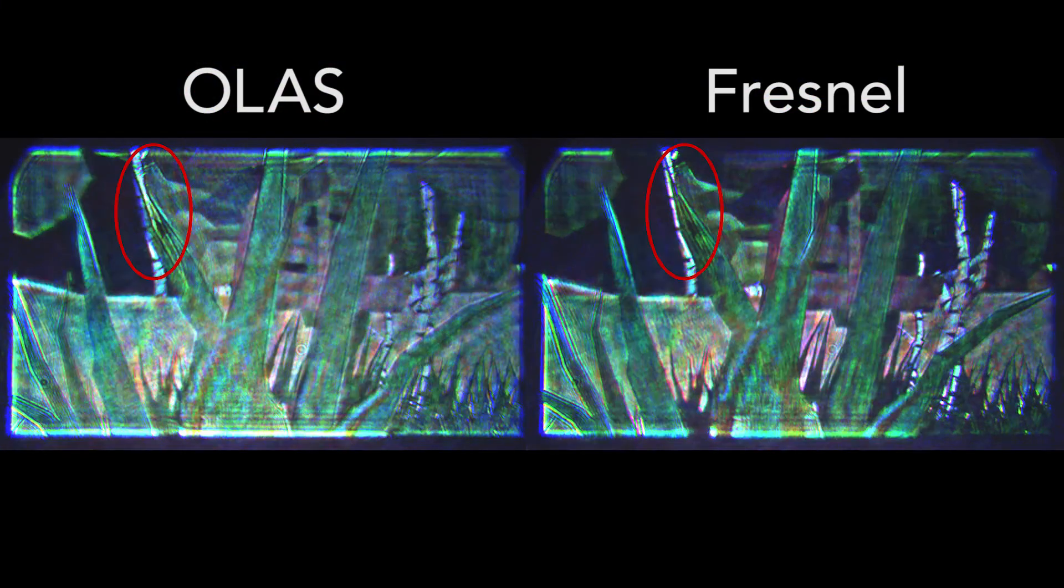Next, we show a scene with parallax. Compared to a simple Fresnel propagation, the OLAS produces more realistic parallax and occlusion, especially noticeable in the circled locations.